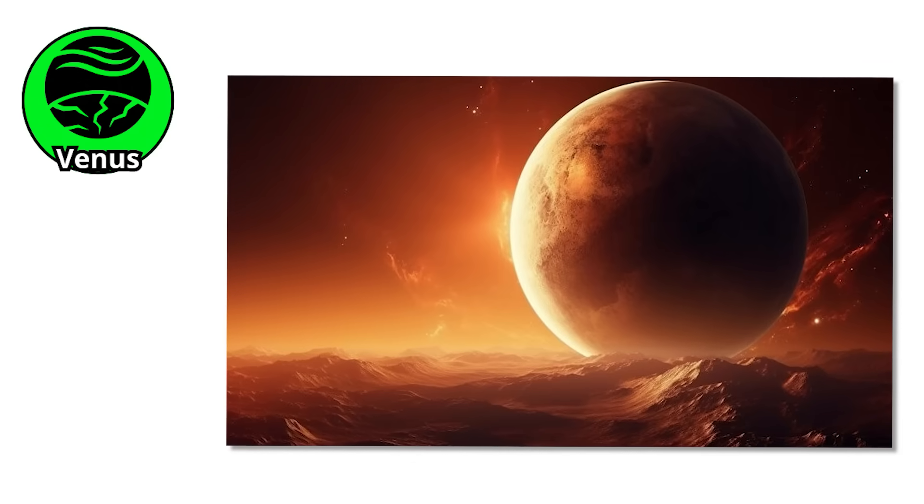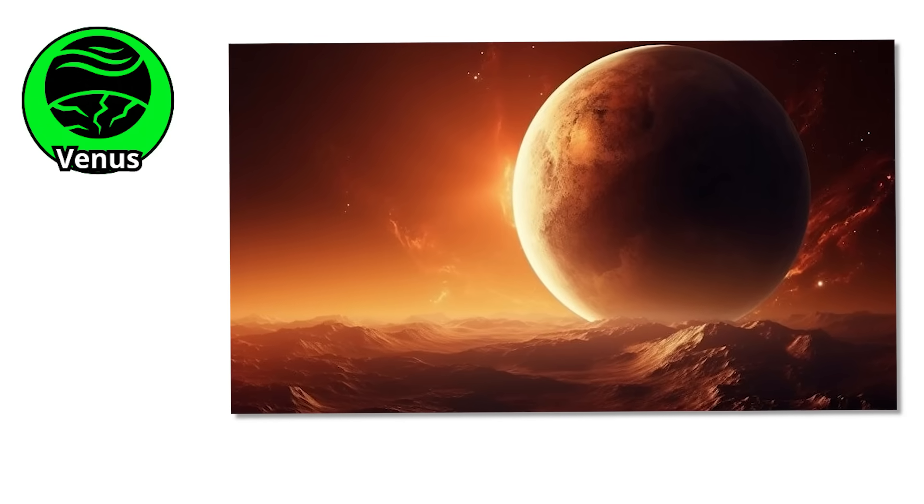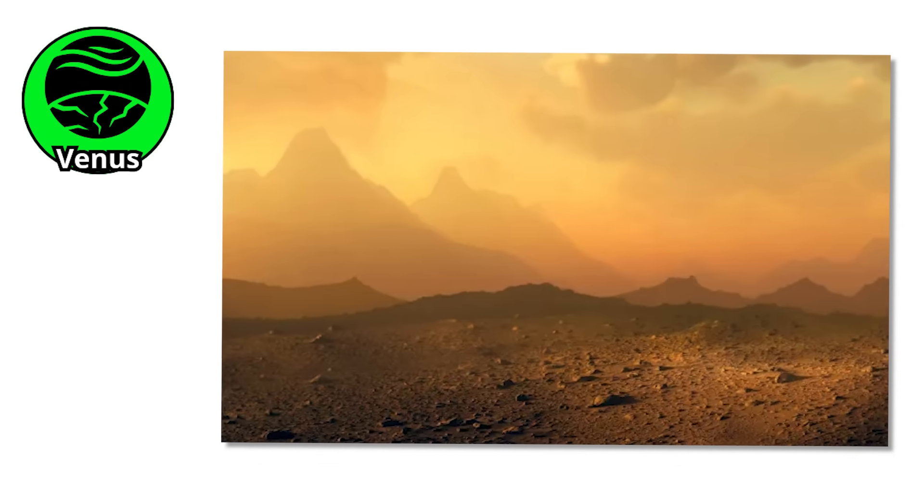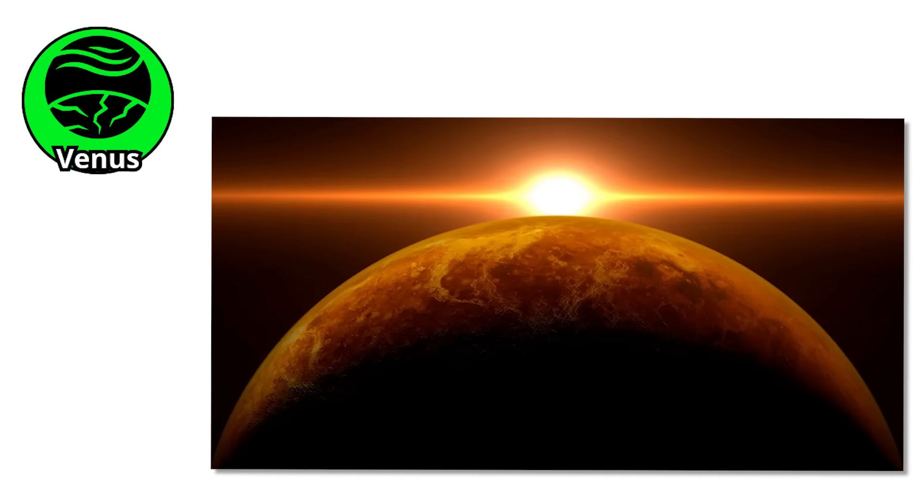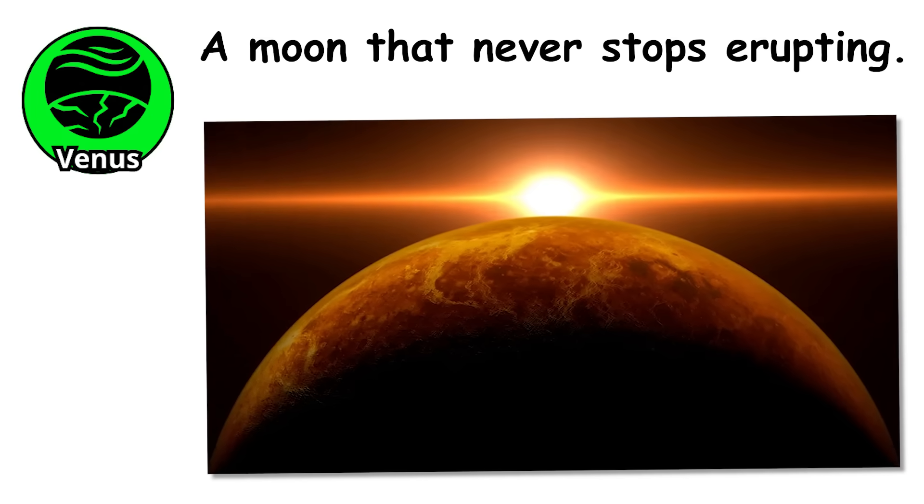From orbit, Venus looks calm and beautiful, a glowing yellow marble in space. But beneath those clouds lies a world straight out of a nightmare. And things only get worse when we travel farther out to Io, a moon that never stops erupting.